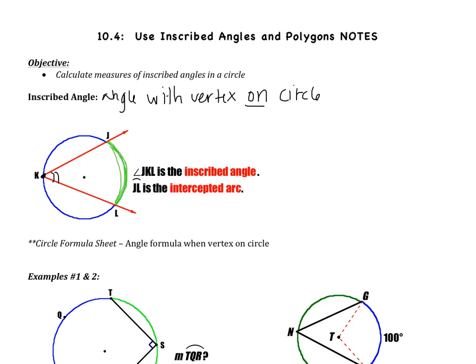So besides knowing what an inscribed angle is, you have to know that the measure of the angle is one half the measure of the intercepted arc. In this case, if arc JL was 100 degrees, the angle then would be 50 degrees. The angle is half of the arc.